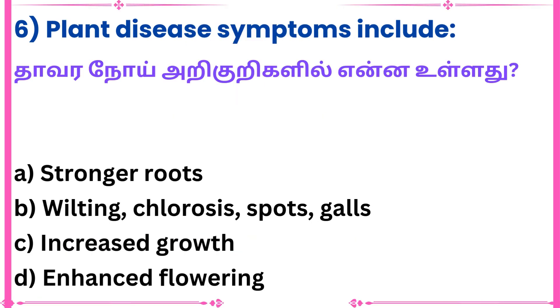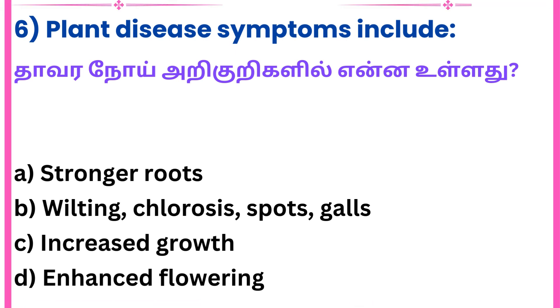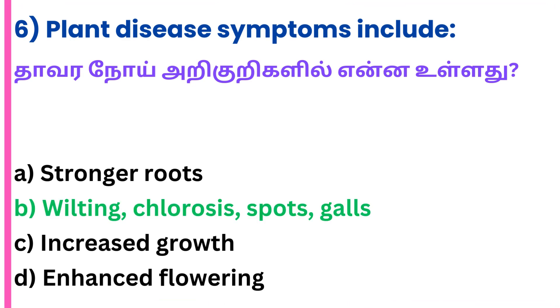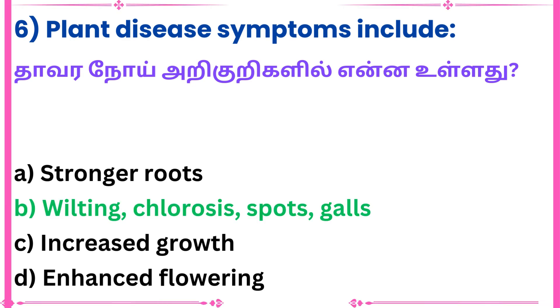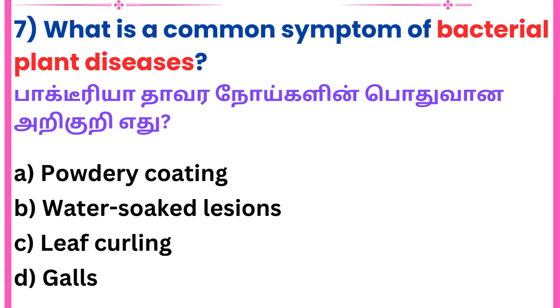Sixth question: Plant disease symptoms include — Answer: Wilting, chlorosis, spots, and galls.